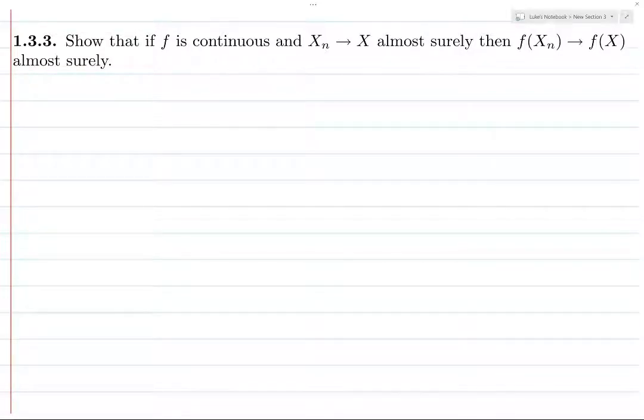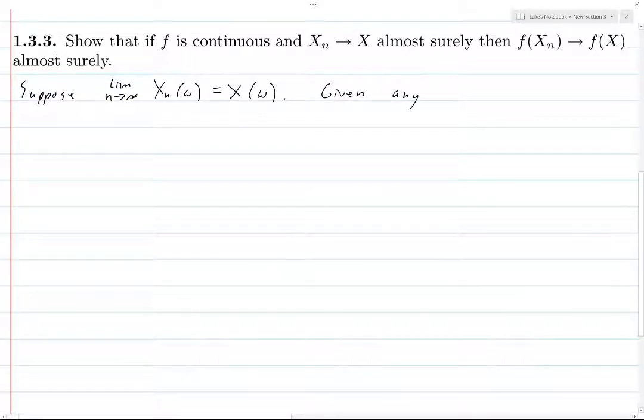By the way, I might say almost everywhere. I'm more used to saying almost everywhere instead of almost surely, but it's literally the exact same thing. So suppose we have some omega such that the limit as n goes to infinity of x_n of omega equals x of omega. So we know that this condition is going to hold for almost every omega.